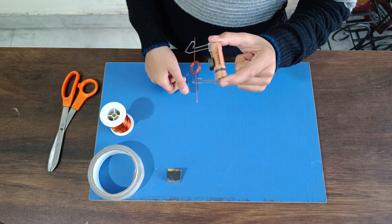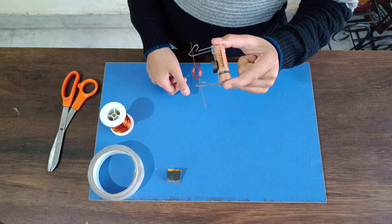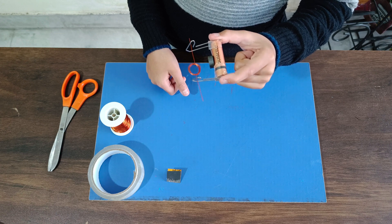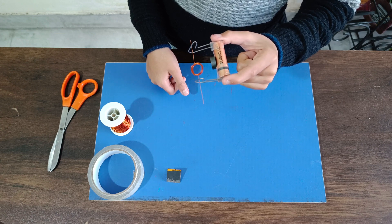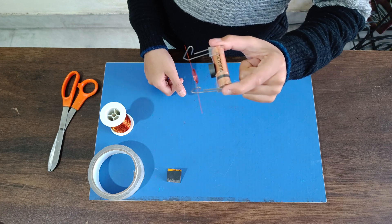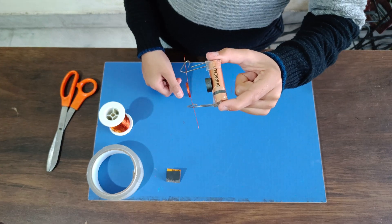The coil rotates because when current passes through it, the coil behaves like a magnet and the round magnet on the battery repels and attracts, creating the rotation. But as soon as the shining part of the coil's end touches the paper clip, the current stops in the coil and it stops behaving like a magnet.